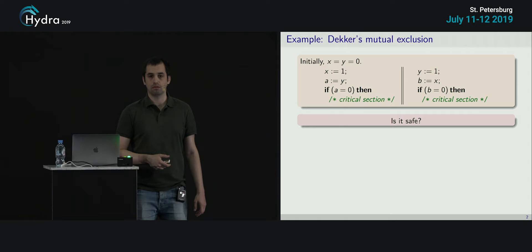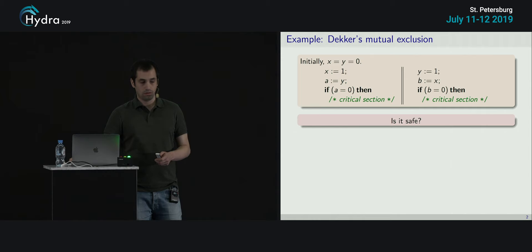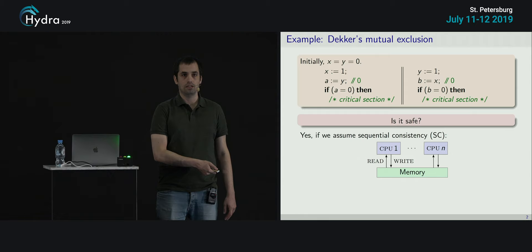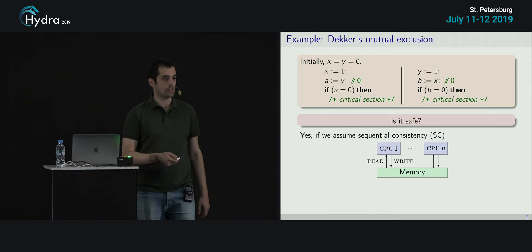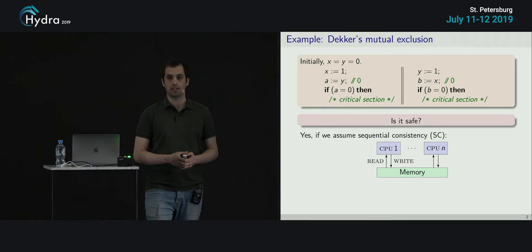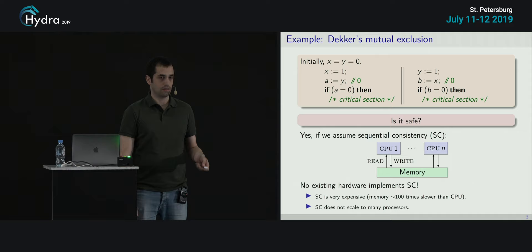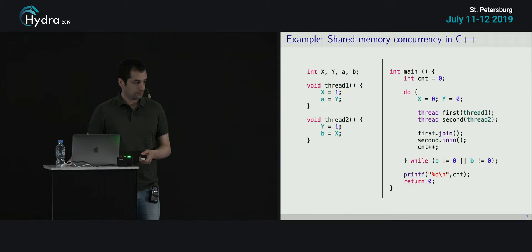Maybe you already know this example, but let's walk through it slowly. If we set X to one first and then Y, then the second thread will necessarily see X=1 and will not enter the critical section. Conversely, the first thread will not enter the critical section. So under sequential consistency, assuming this simple model where threads take turns communicating with the global memory, this program is safe. There is no way that both threads can both enter the critical section simultaneously. But, as we know, there is no existing hardware that actually implements sequential consistency. It is very expensive to implement, it doesn't scale for many cores.